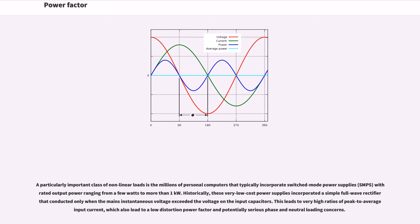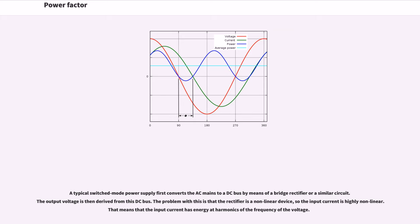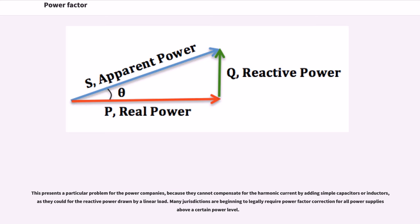A particularly important class of non-linear loads is the millions of personal computers that typically incorporate switched-mode power supplies with rated output power ranging from a few watts to more than one kilowatt. Historically, these low-cost power supplies incorporated a simple full-wave rectifier that conducted only when the mains instantaneous voltage exceeded the voltage on the input capacitors. This leads to very high ratios of peak to average input current, which also leads to a low distortion power factor and potentially serious phase and neutral loading concerns. A typical switched-mode power supply first converts the AC mains to a DC bus by means of a bridge rectifier or similar circuit, and the output voltage is then derived from this DC bus. The problem is that the rectifier is a non-linear device, so the input current is highly non-linear, meaning the input current has energy at harmonics of the frequency of the voltage.